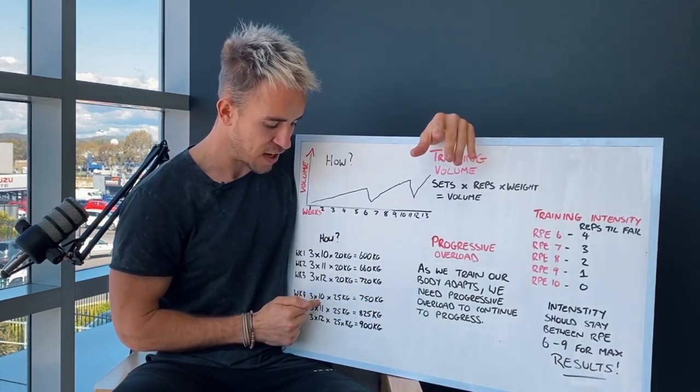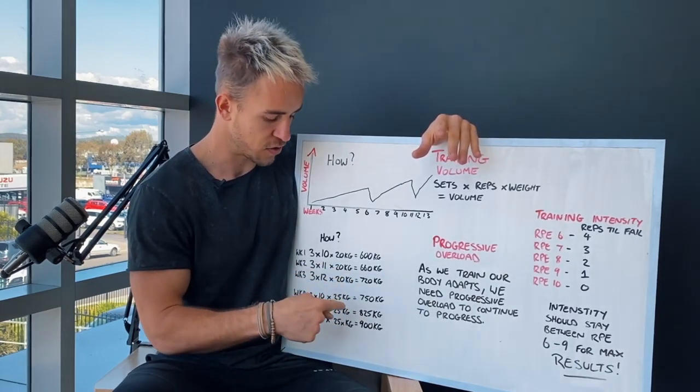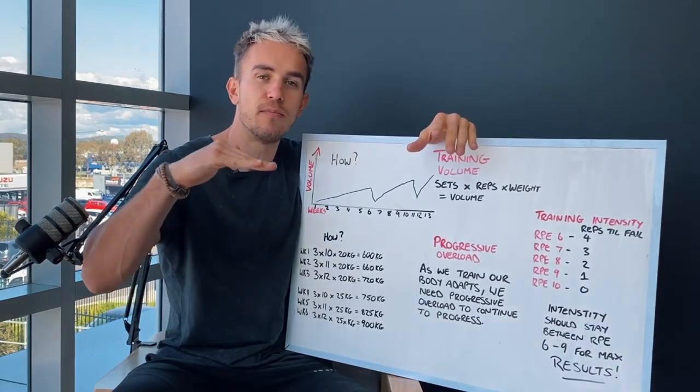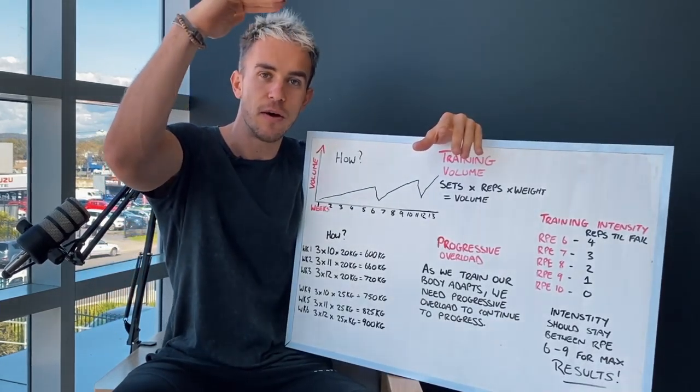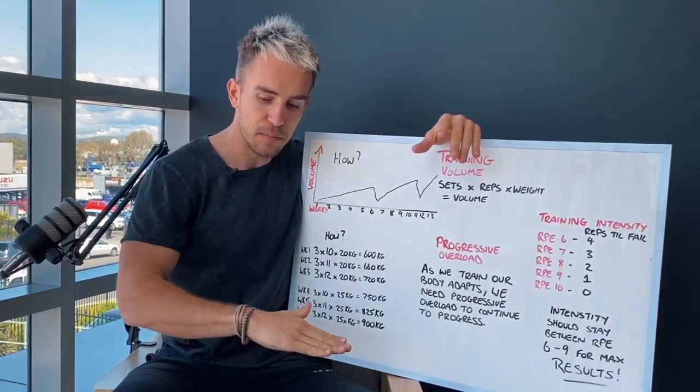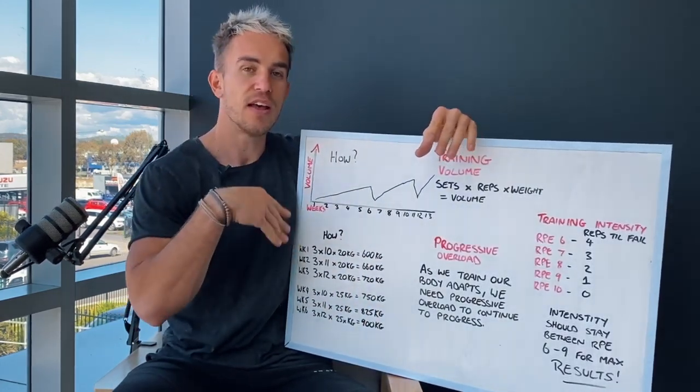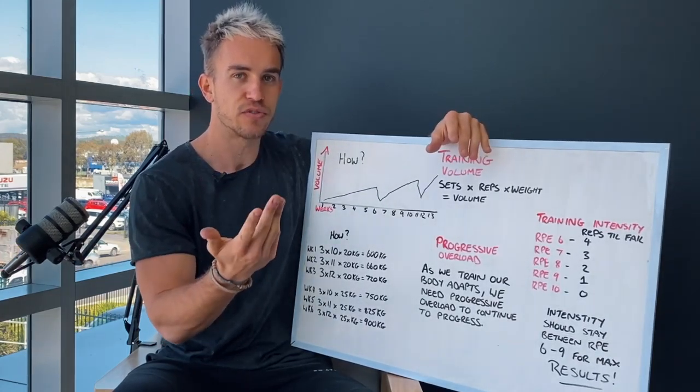Now you could do it in this type of progression here and we could go three sets of 10, then three sets of 11, then three sets of 12 and the following week we go back down to the bottom of the rep range and we go three sets of 10 but we've just increased the weight. That's how you can do it in the rep range. We're going to keep climbing the rep range until we hit the top and then we're going to go back down to the bottom of the rep range when we're ready and increase the weight and try and climb that ladder again. That's how we become smarter with our training.